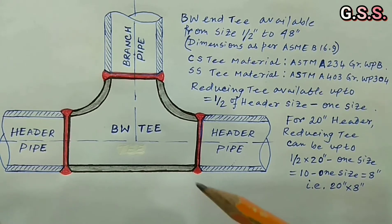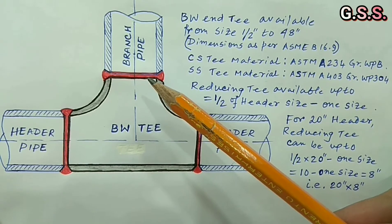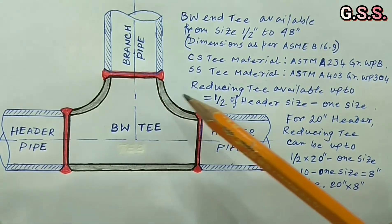T can be equal T for same size branch connection and can be reducing T for lower size branch connection.